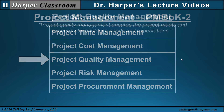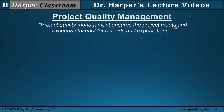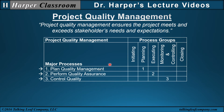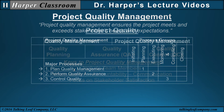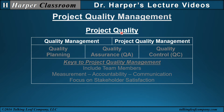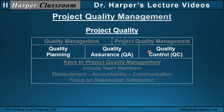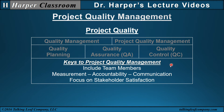Next is project quality management. Project quality management ensures the project meets and exceeds stakeholder needs and expectations. There are three major processes. We first compare the differences between quality management and project quality management, and then look at the three stages of a quality control program: quality planning, quality assurance to assure the plan is done correctly, and quality control where we have change management. All three constitute a quality program. The keys to project quality management are: always include team members, measurement, accountability and communication, and focus on stakeholder satisfaction.